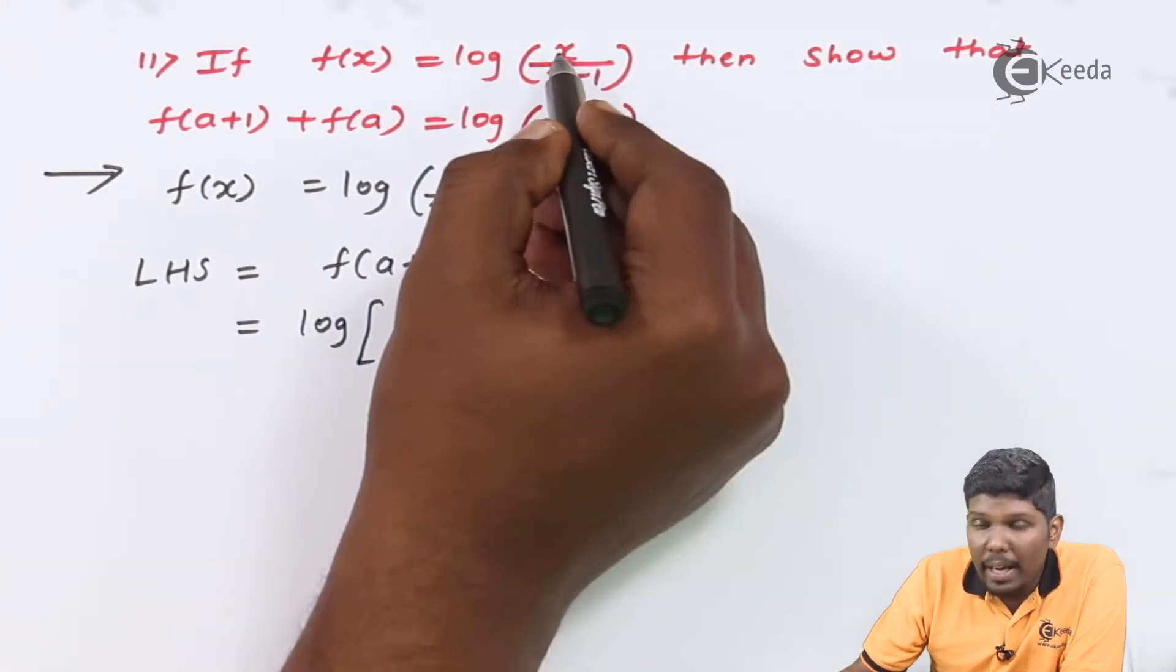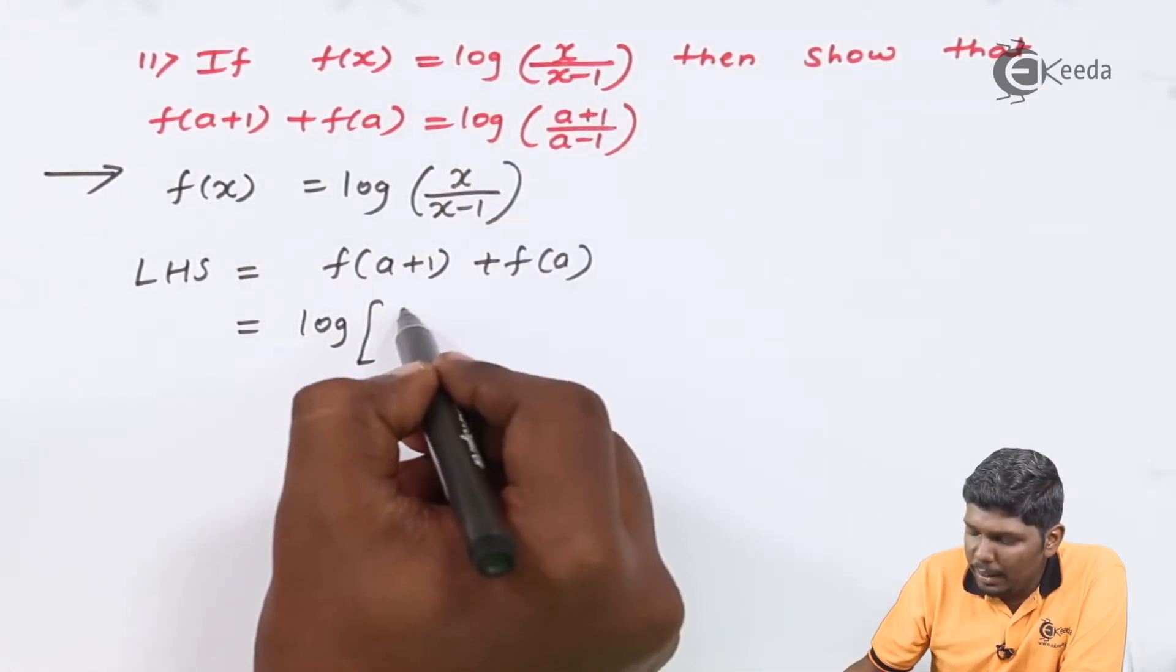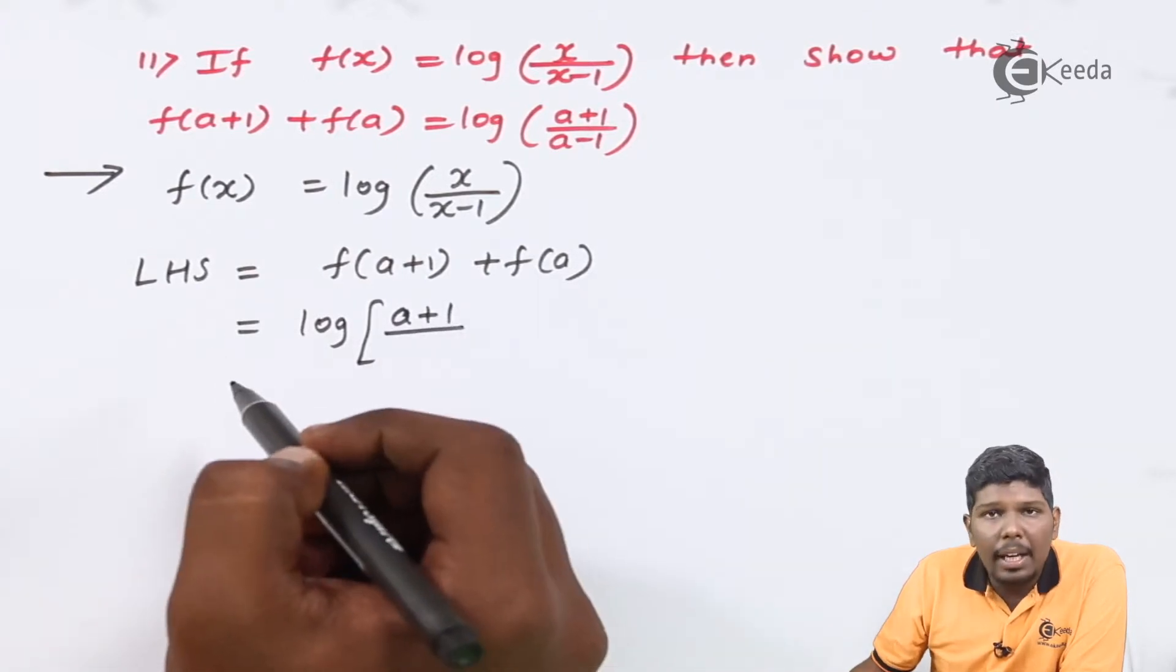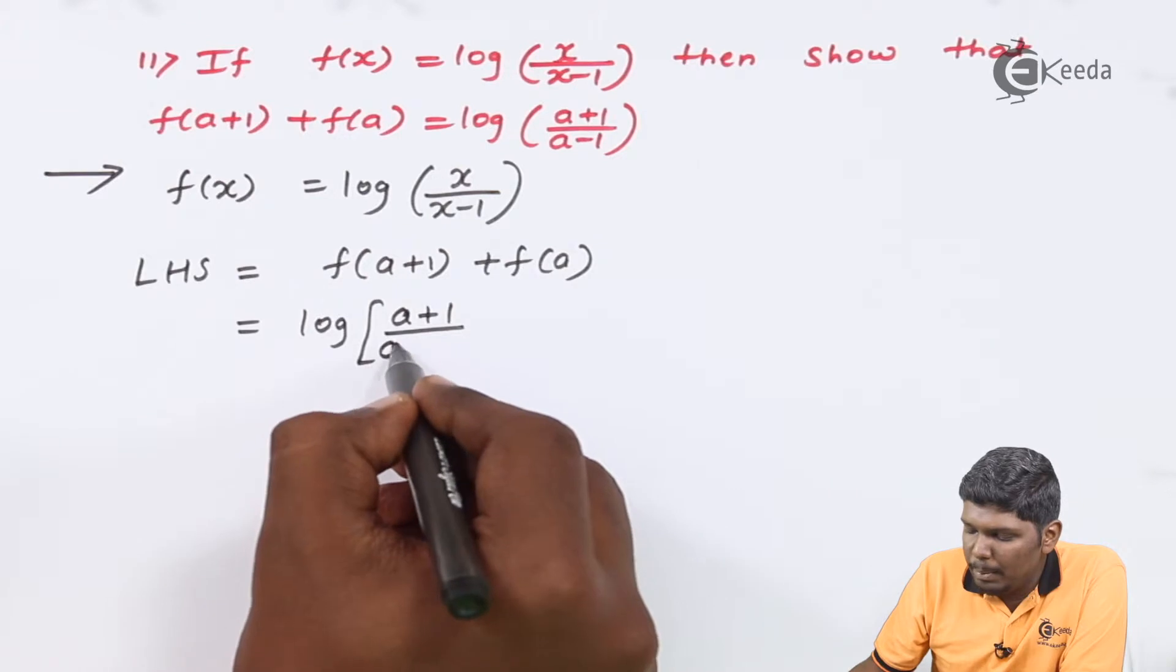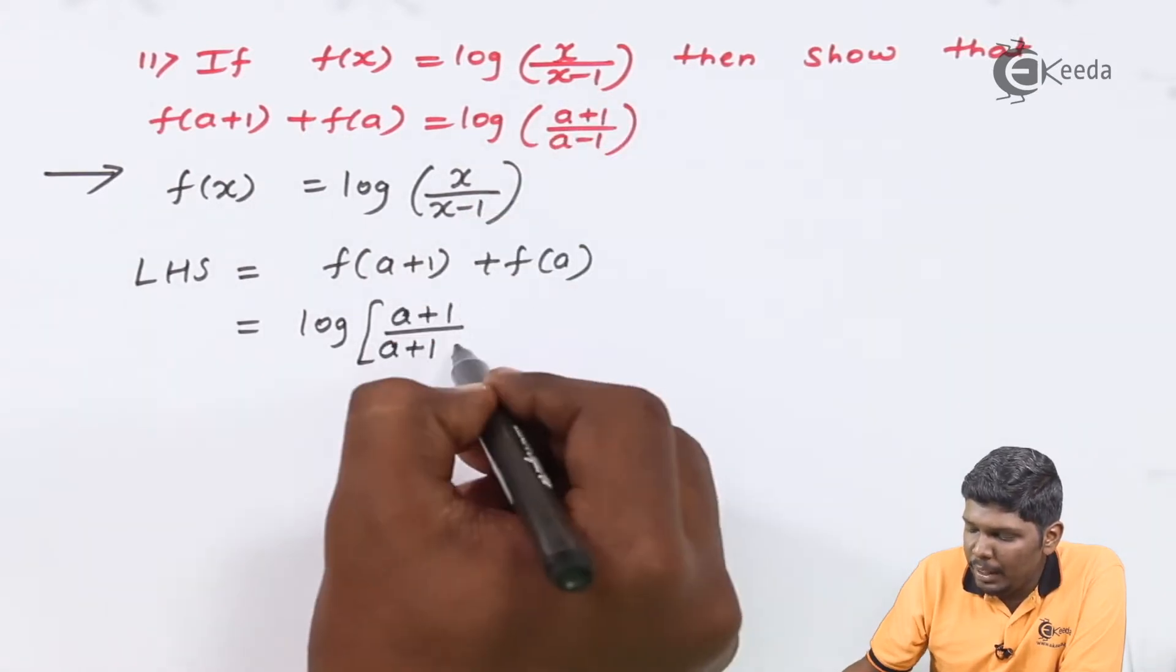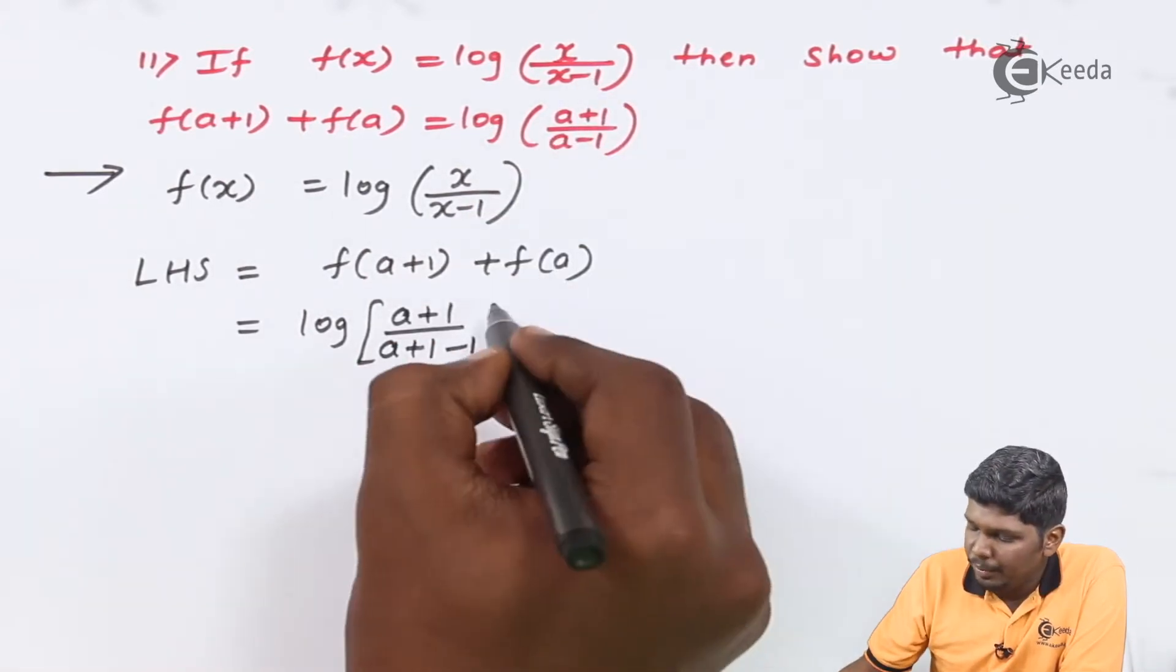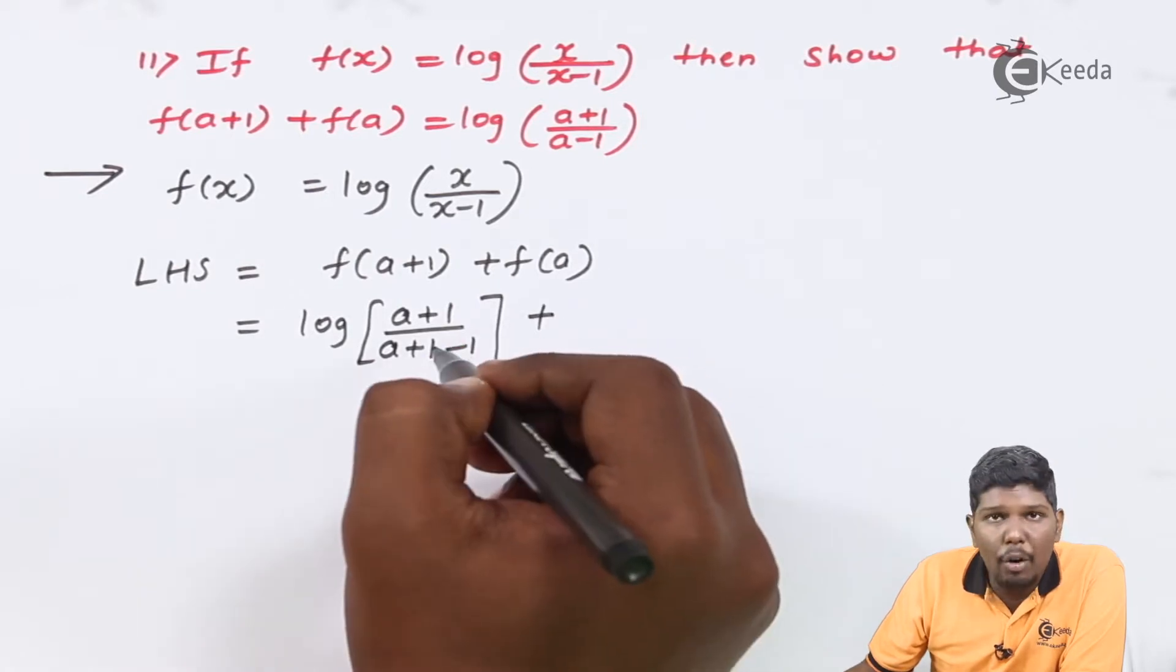So, log as it is, we have x in the numerator, that part will be replaced by a+1. In the denominator, x will be replaced by a+1 and we have minus 1 also.